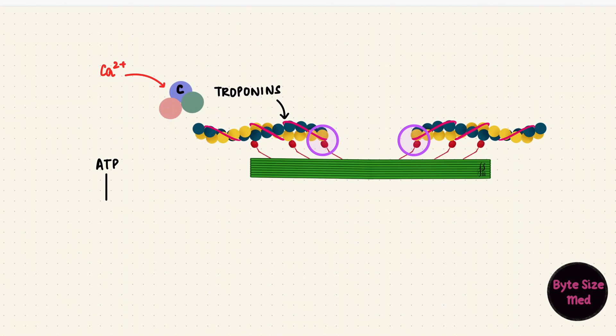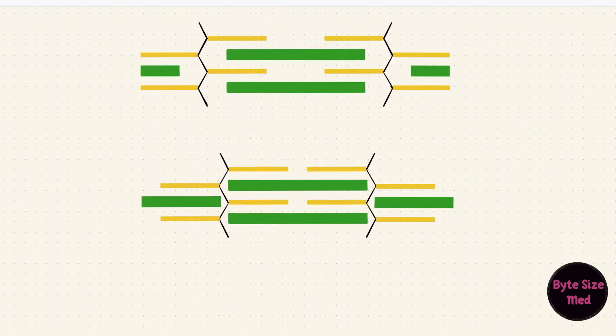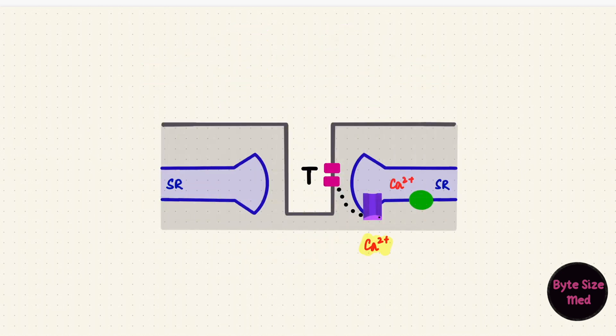The energy from breaking down the ATP causes the myosin head to bend at the hinge region, dragging the thin filament along with it. The thin filament sliding inwards shortens the sarcomere, causing muscle contraction. There's a calcium ATPase pump